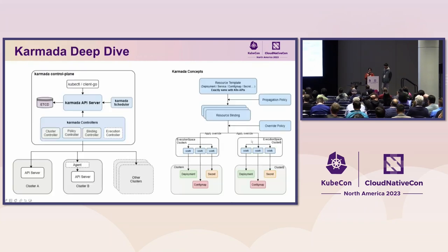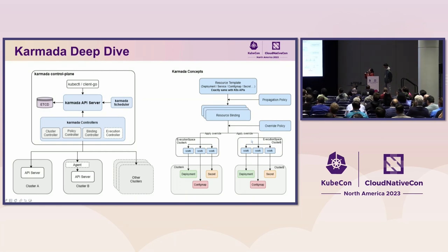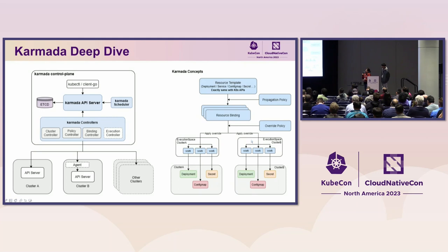Let's look at how Karmada looks like. On the right, the Karmada control plane looks much like a Kubernetes native control plane. It has a Karmada API server, a Karmada controller manager with a bunch of controllers, a Karmada scheduler, and also uses etcd as a data store to store all objects. Member clusters — each individual Kubernetes cluster — can be joined to this control plane via either push mode or pull mode.